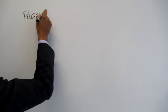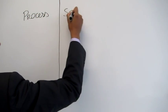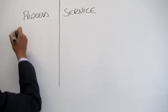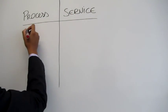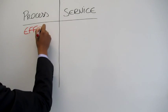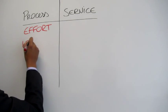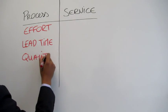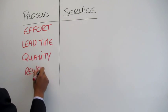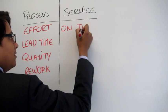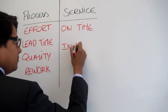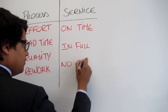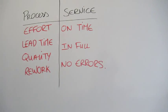Measuring business processes and services is easy. It does not have to be complicated. Some common measures of processes are effort and time, lead time from start to finish, quality such as data errors or reconciliations, and amount of rework. Service measures include delivering work on time, in full, with no errors.